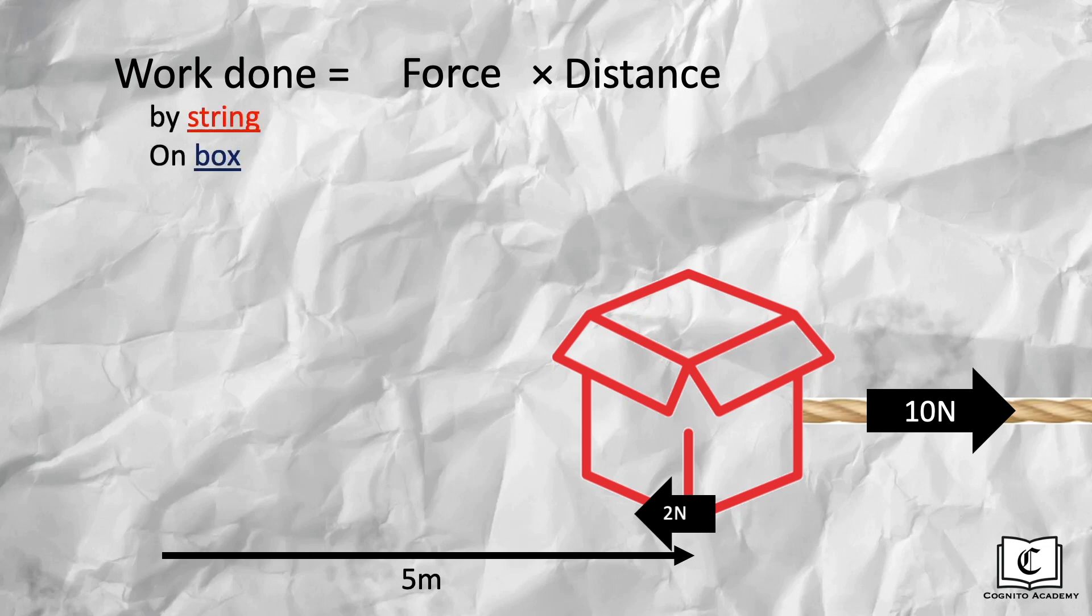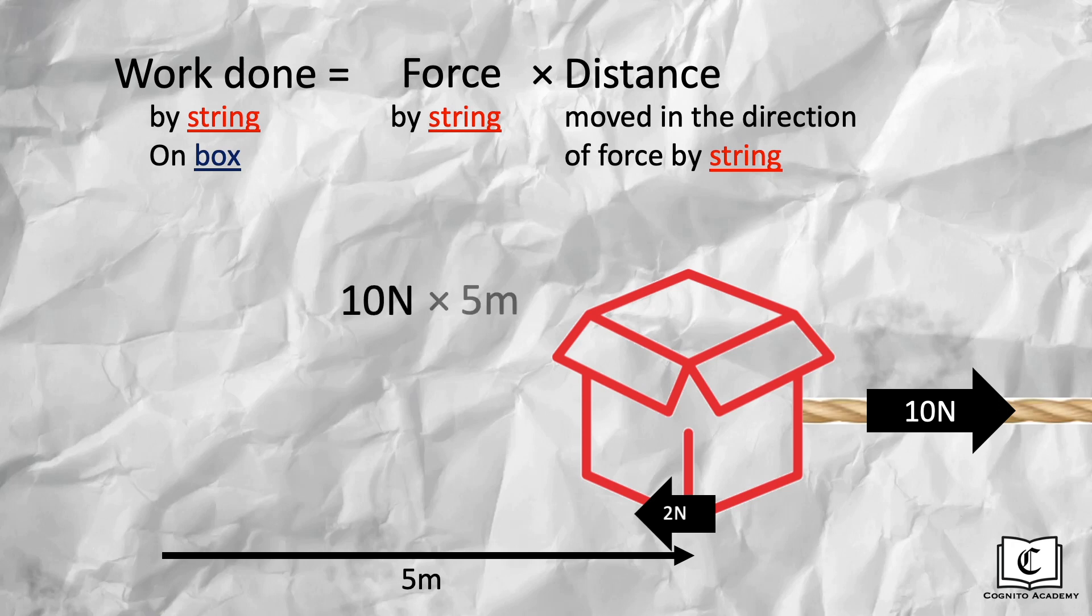The hint is actually in the phrase, work done by the string. So the force we will use is the force by the string, which is the 10N. And the distance we use is the distance moved by the box that is in the same direction as this 10N force, which is 5 meters. Hence, work done by the string on the box is just 50N meters or 50J.